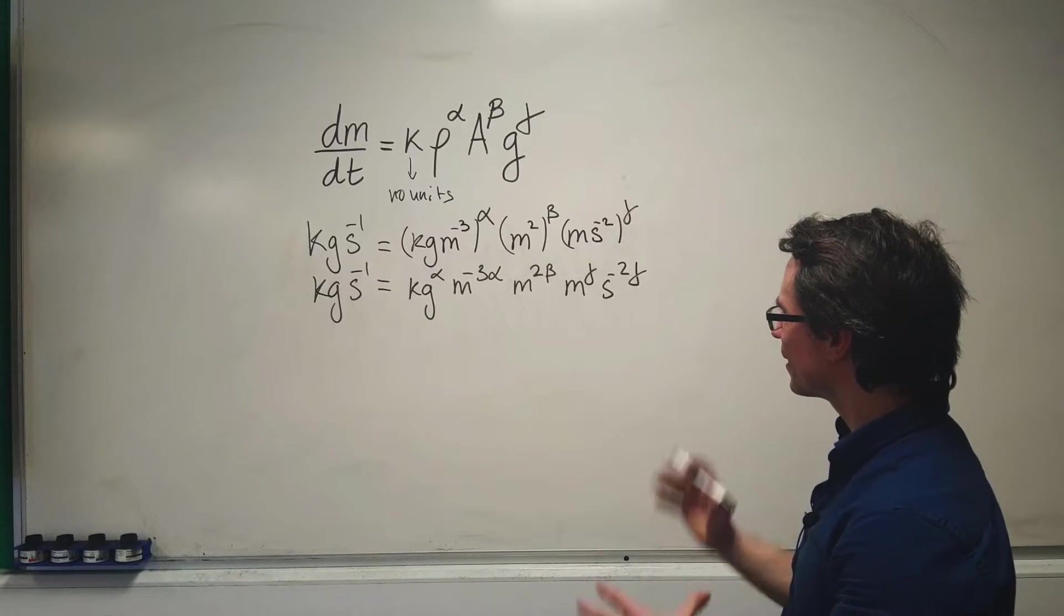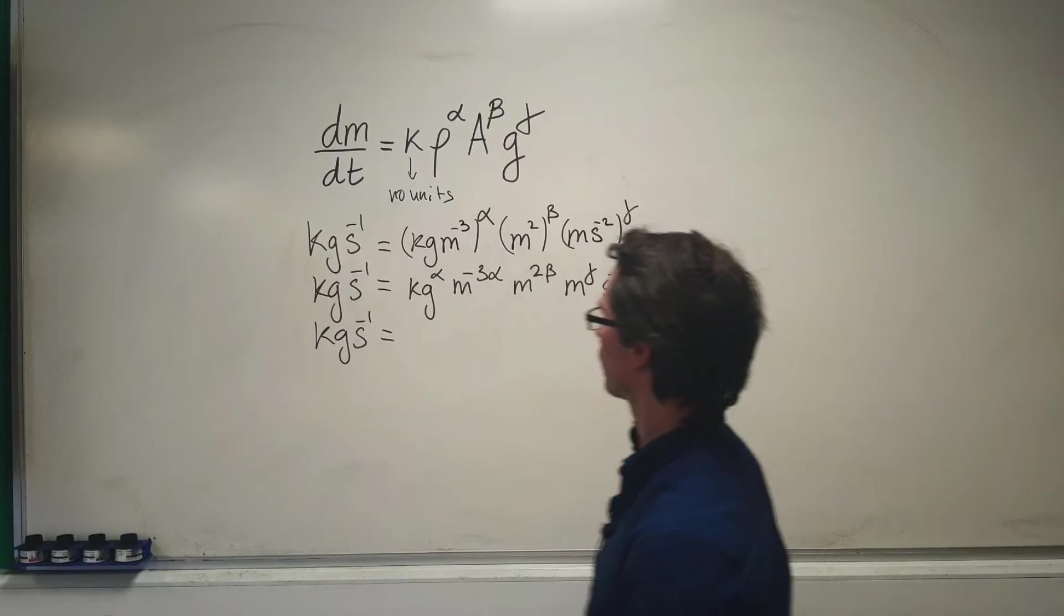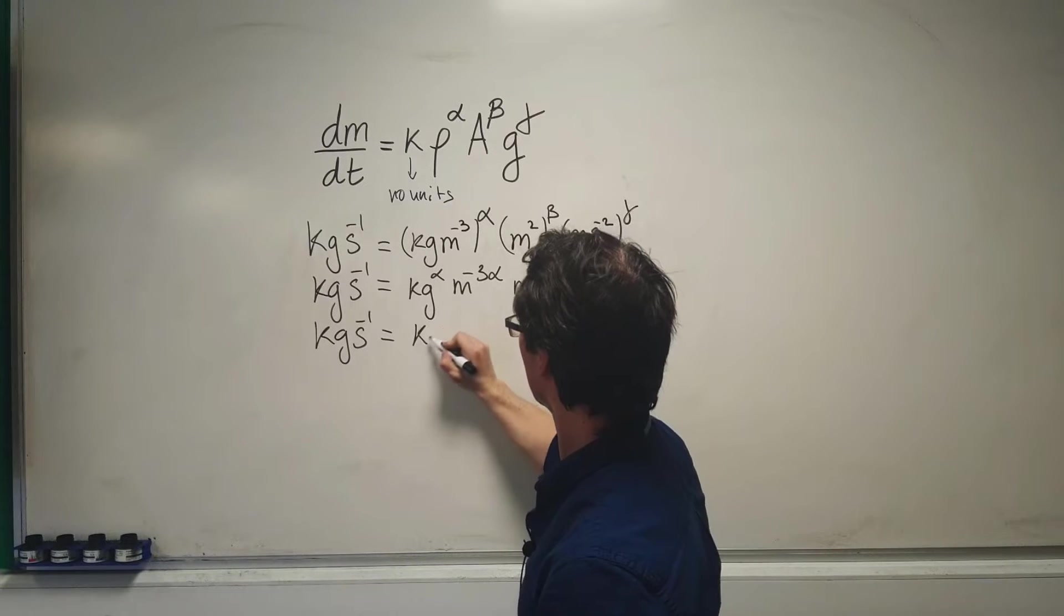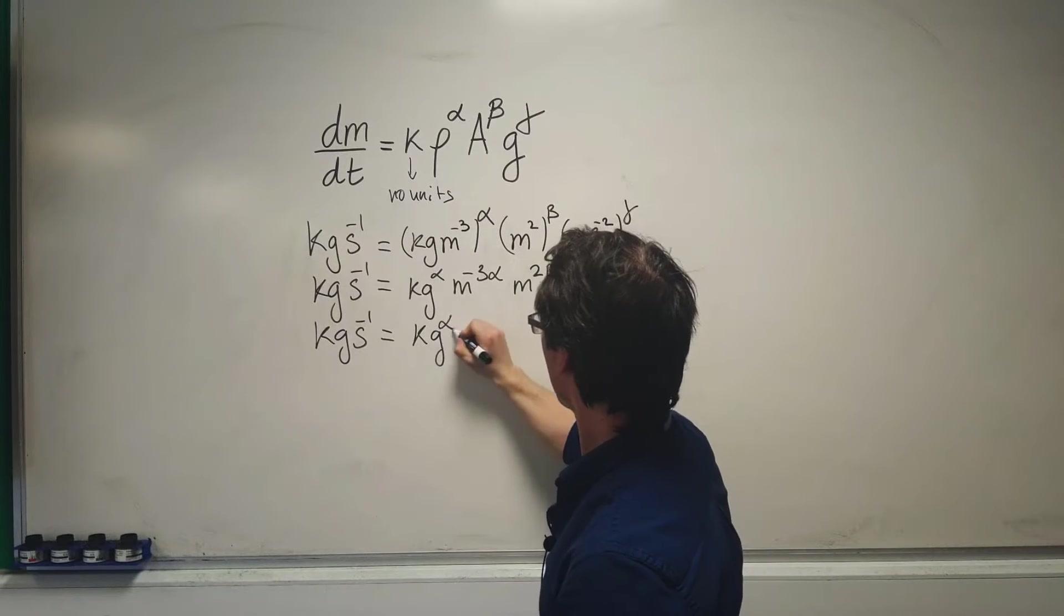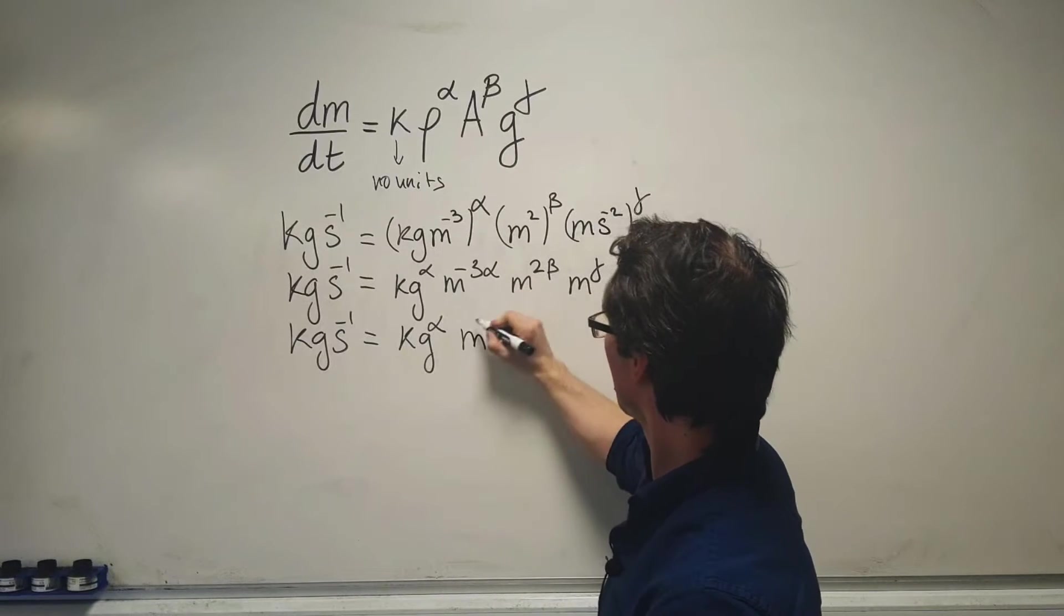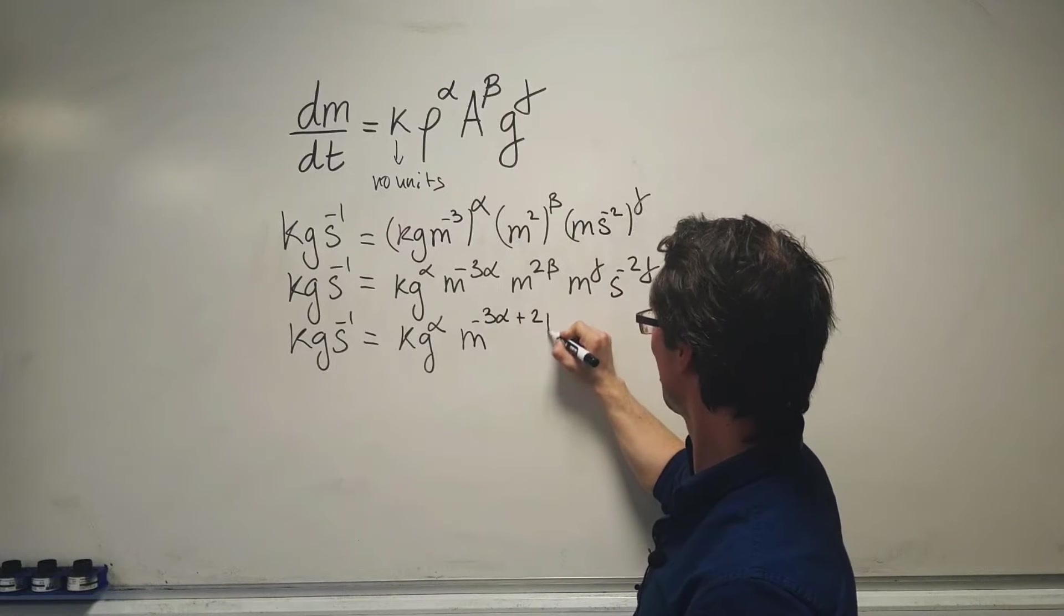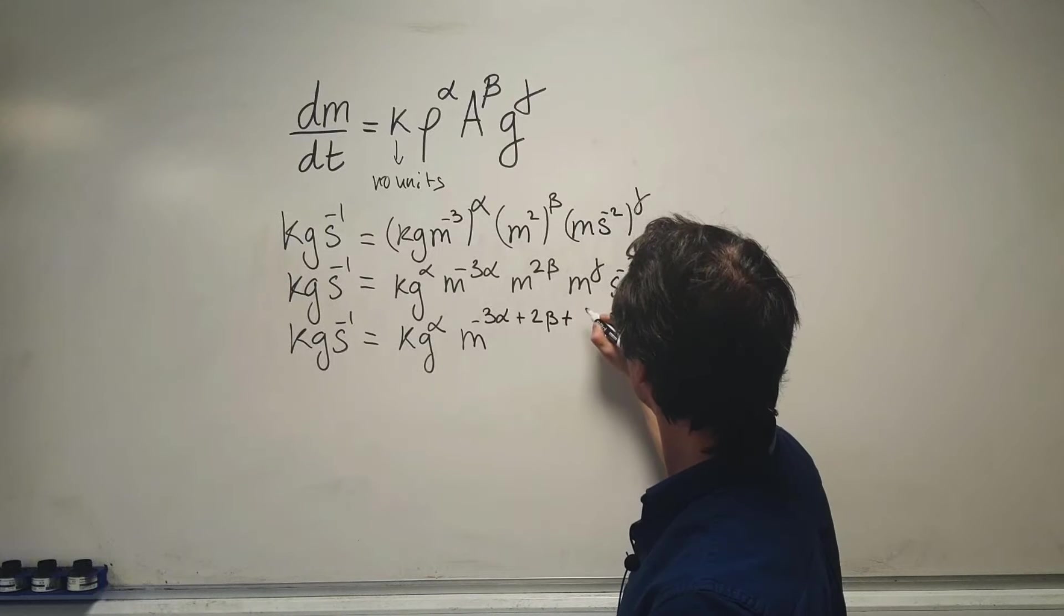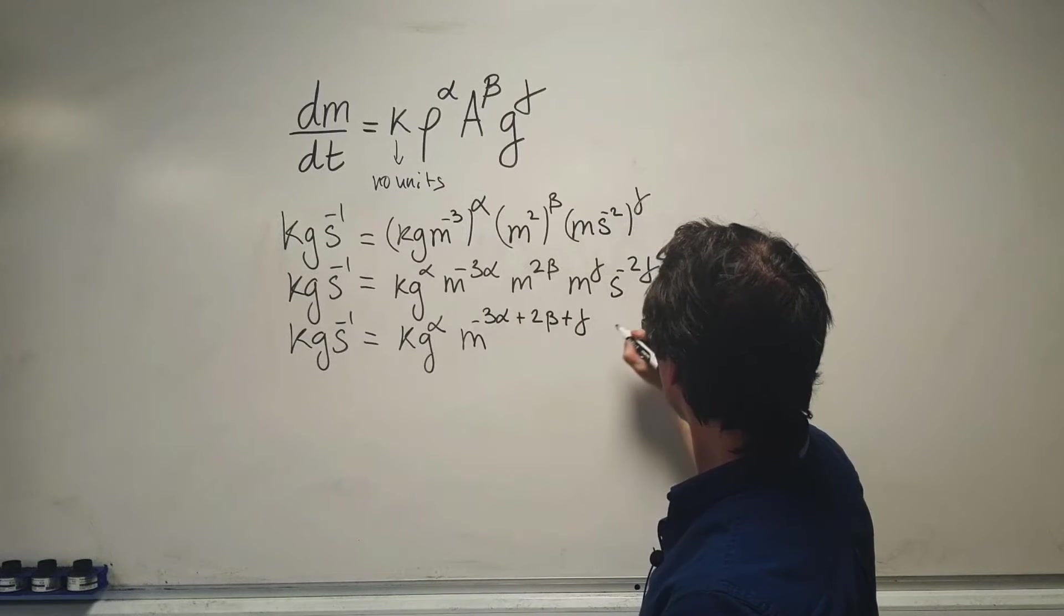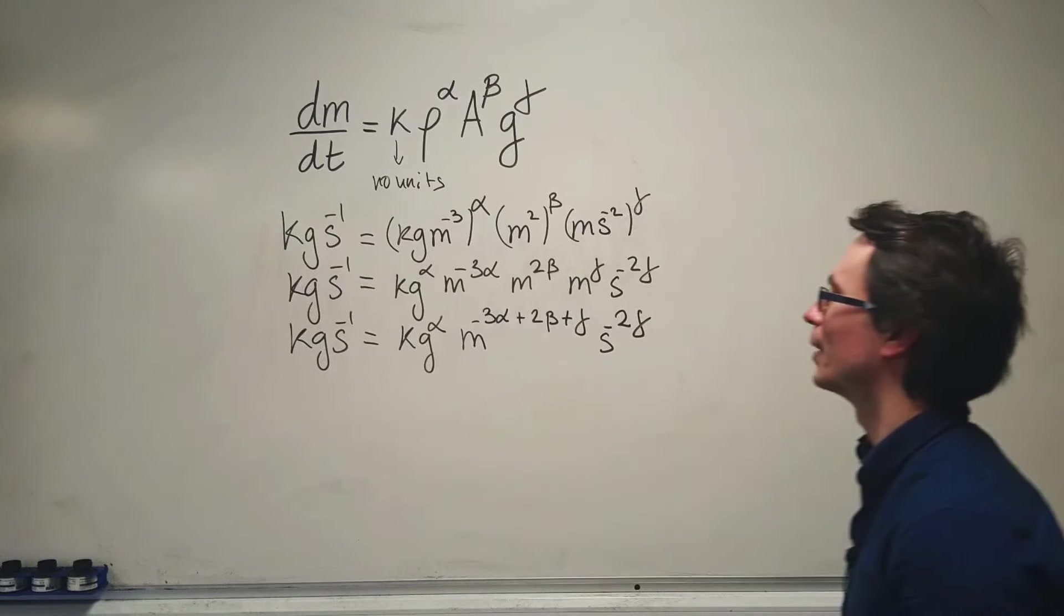We're nearly there. This equals kg^α · m^(-3α + 2β + γ) · s^(-2γ).